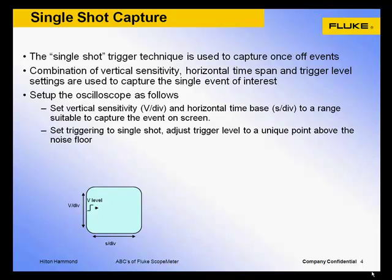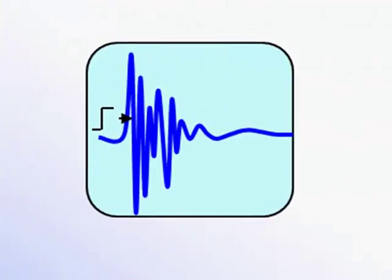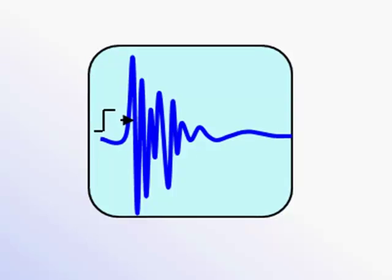Set up the oscilloscope as follows. First, set the vertical sensitivity, making sure that the expected amplitude of the waveform will be within the vertical range of the scope. Set the horizontal time base to capture the desired time span of the unknown waveform. Next, set the trigger mode to single shot capture. Then adjust the trigger level to just beyond the signal noise floor or at 50% of the expected waveform amplitude. The scope is now armed, waiting for the next occurrence of the event. Once captured, the scope will freeze until the trigger display update is manually re-armed.